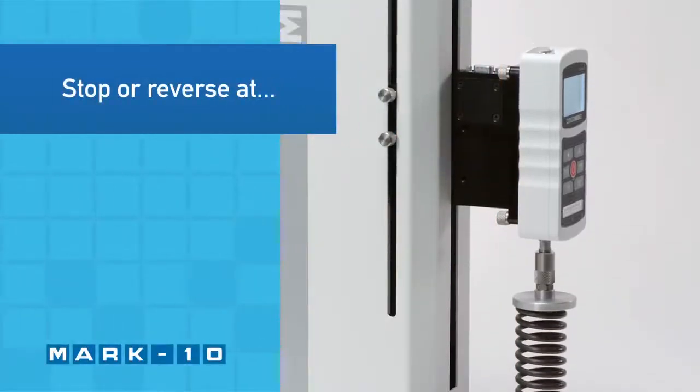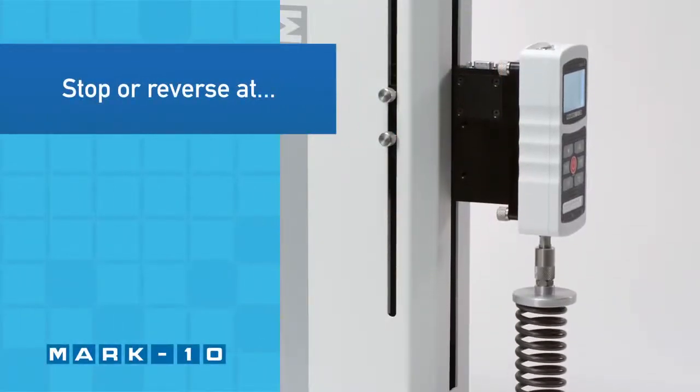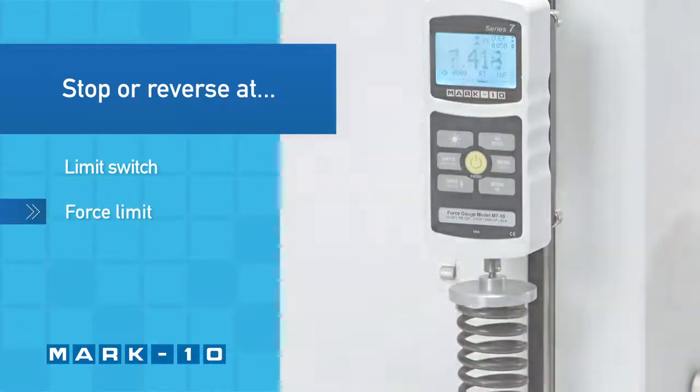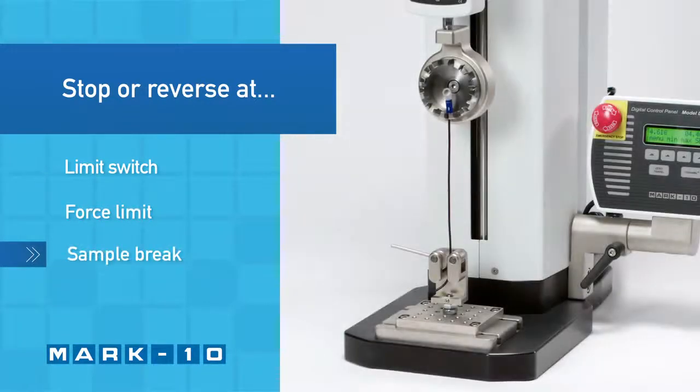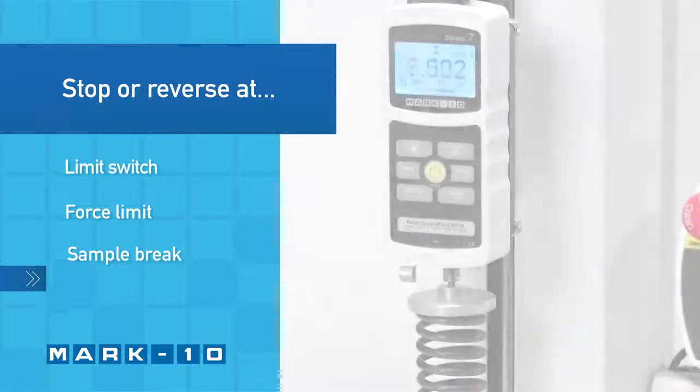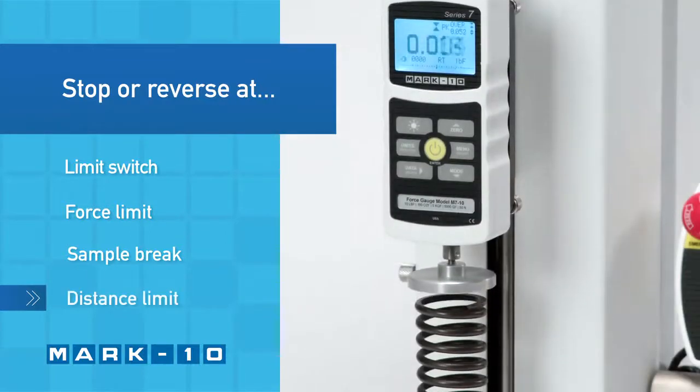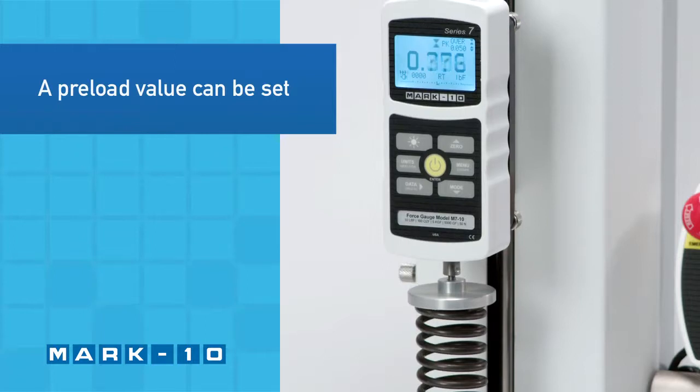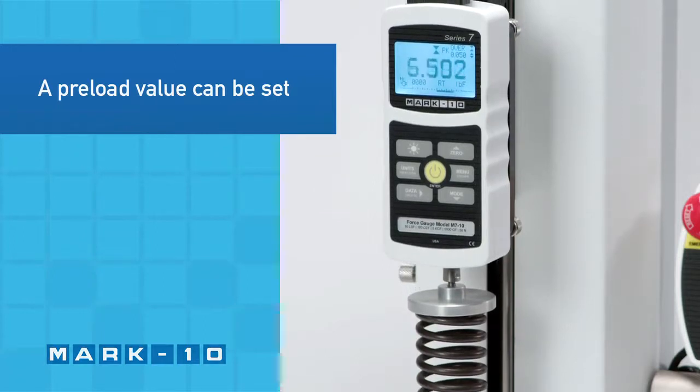The test stand can be configured to automatically reverse or cycle between limit switches, when reaching a force, when the sample has broken, or when a distance limit has been reached. A pre-load value can be set to automatically zero the travel display at initial sample contact.